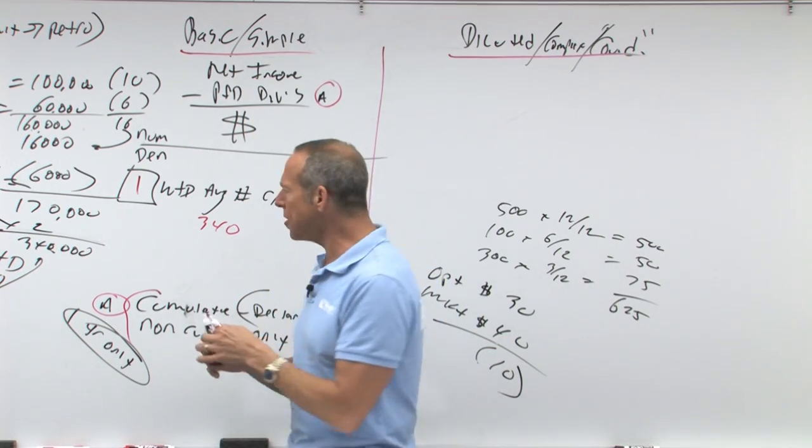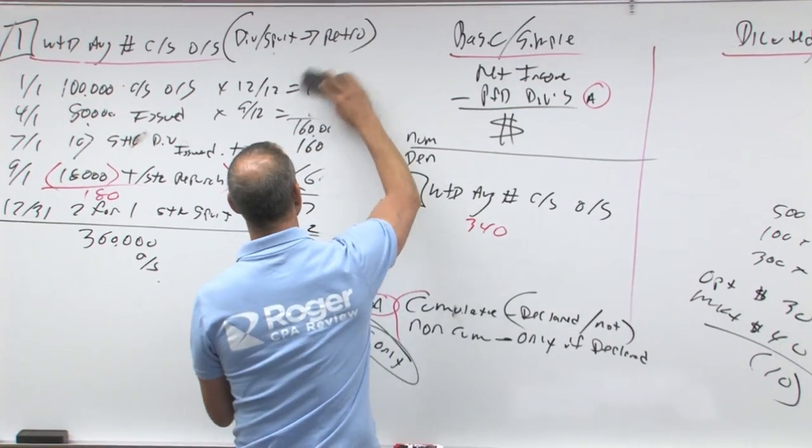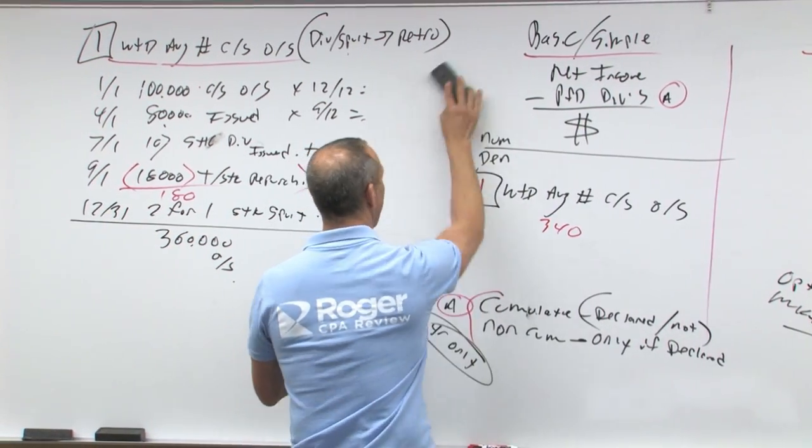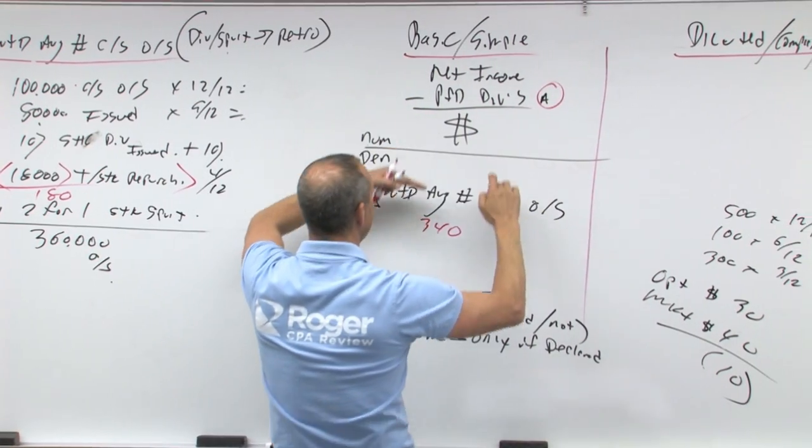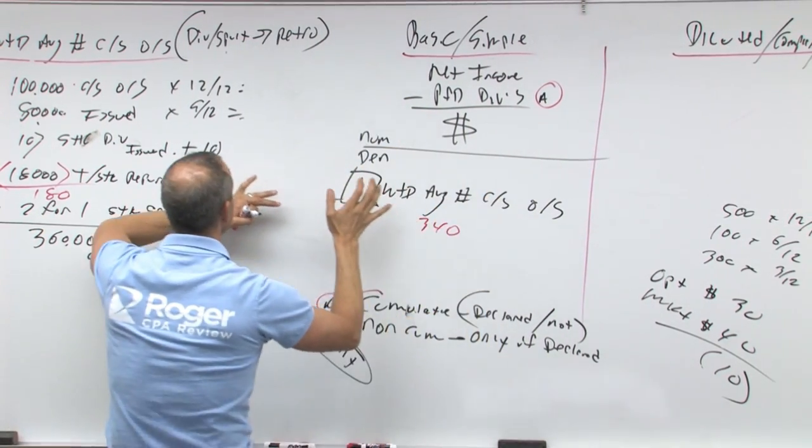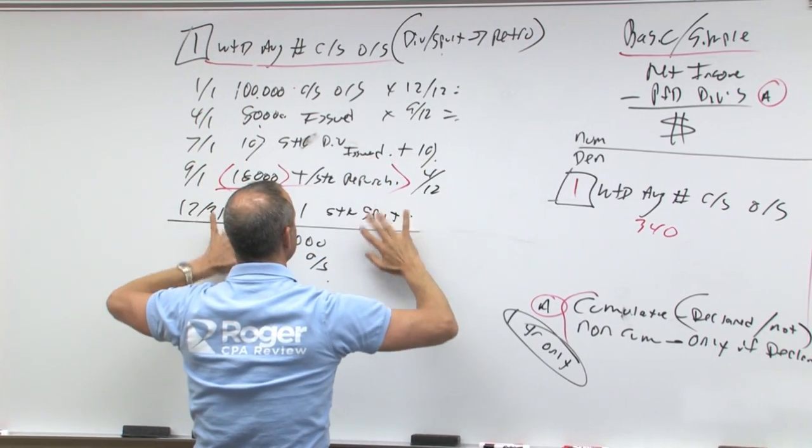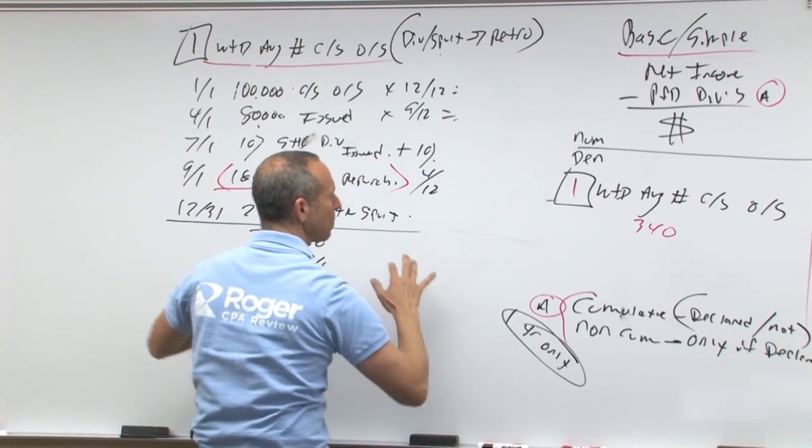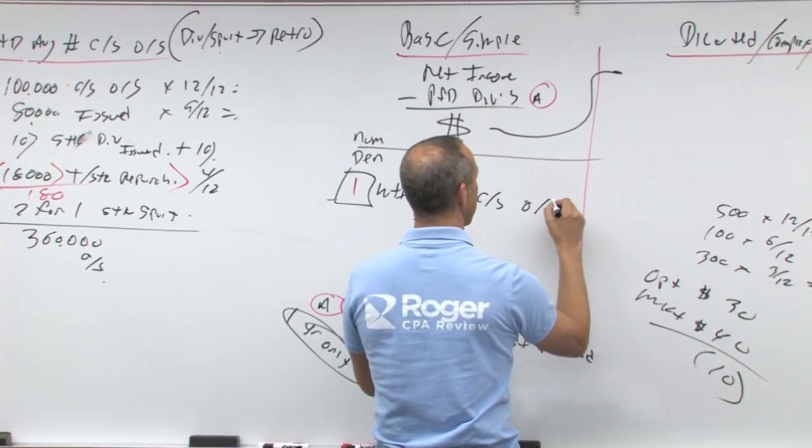So what I want to do is come across and do this calculation. Let me clean this up just a little bit. So we started out here, we said net income minus preferred, boom, divided by weighted average number of shares outstanding. We define weighted average, says what? Dividends and splits retroactive, go through and take the partial year and so on.